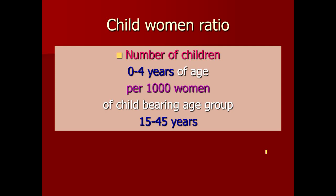Another measure of fertility is the child-women ratio. Children here means the number of children between zero to four years of age group — that is, children under five years — per thousand women of childbearing age group between 15 to 45 years. The numerator is children and the denominator is females of reproductive age group. It is a ratio, not a rate, and serves as an indication of a country's fertility.